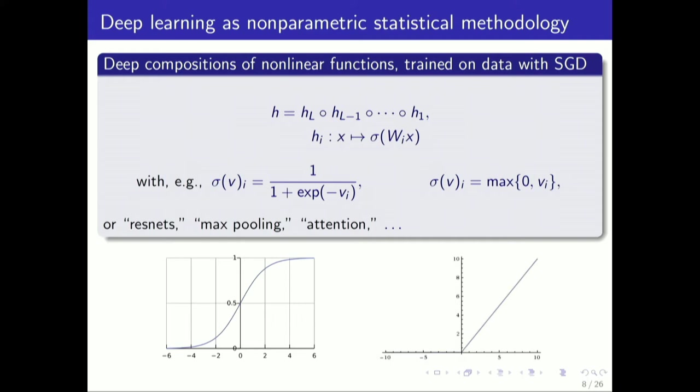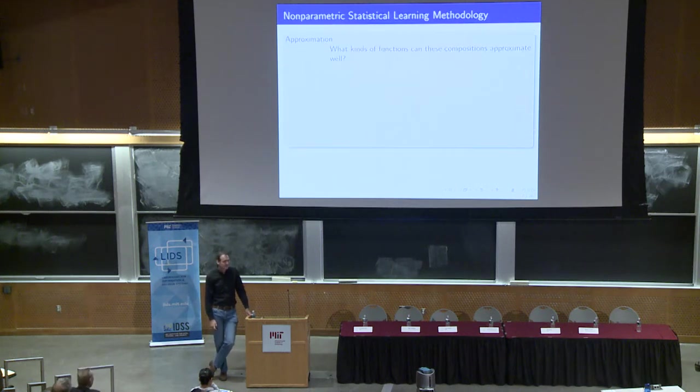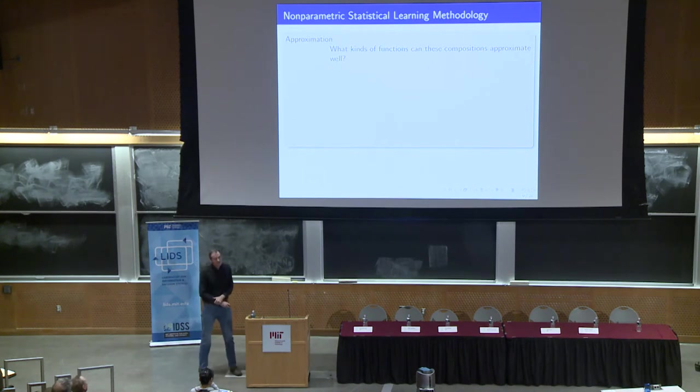The crucial thing is that you have input-output data. You use a stochastic gradient kind of approach to adjust the parameters of this mapping, which are just these W_i's, these matrices, in order to get a good fit to the training data. That's typically done with a very simple-minded stochastic gradient kind of approach. That's deep networks and viewing them as nonparametric prediction method.